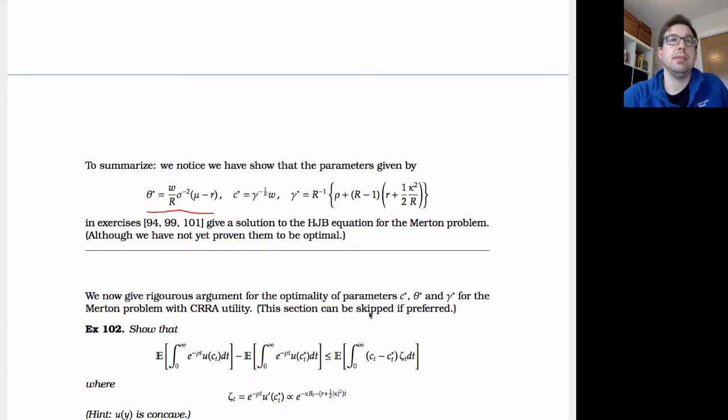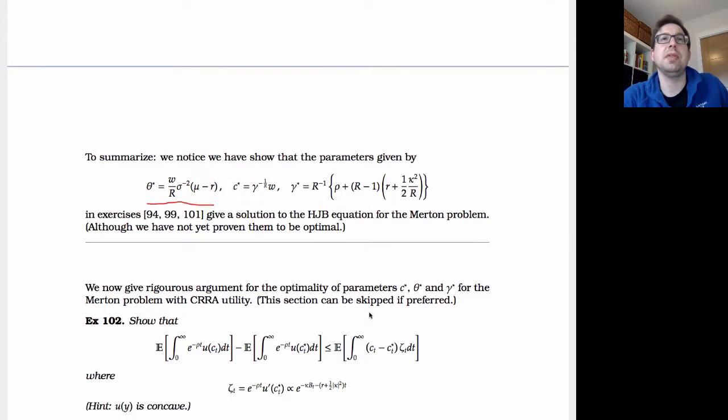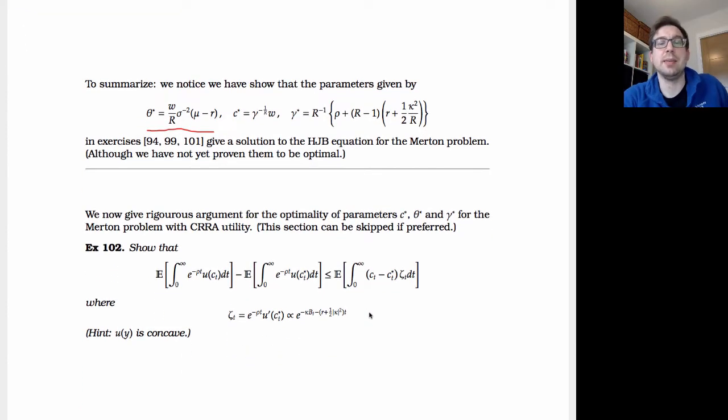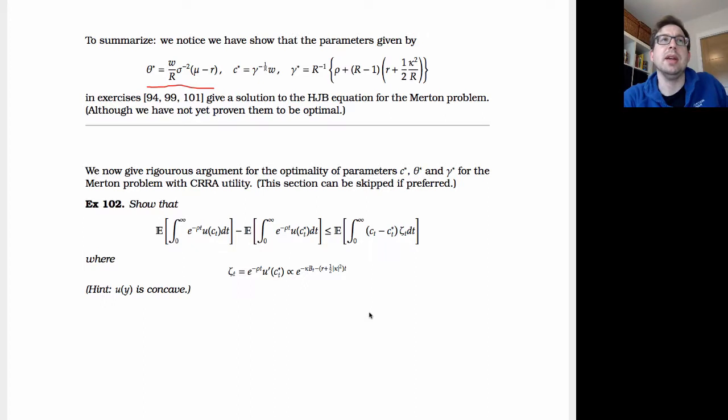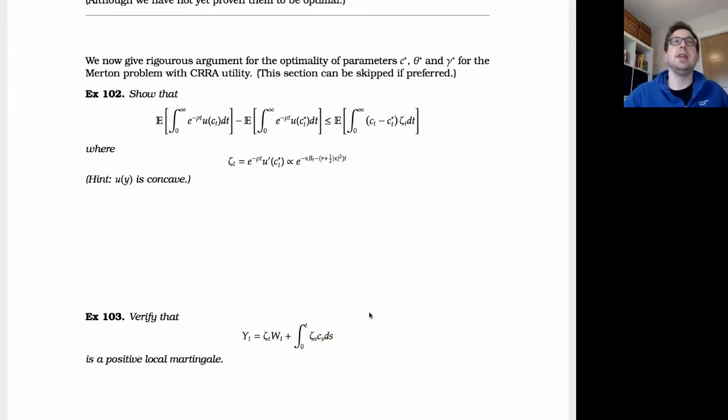This is essential if you want to get a rigorous mathematical proof, though in many ways I'm quite happy if you've come up with a way of solving an HJB equation in the first place, and I'd be willing to bet money that if you can do that, then you've probably got an optimal solution anyway. Let's go through the rigorous parts of this. Some of these exercises here are intended as homework assignments for some of you, so I'm not going to go through the answers to some of the questions. A little bit fiddly, but I'll give you some hints as to how to solve those as well. So we now give a rigorous argument of optimality of the parameters C star, theta star, and gamma star as above for the Merton problem with a CARA utility function.